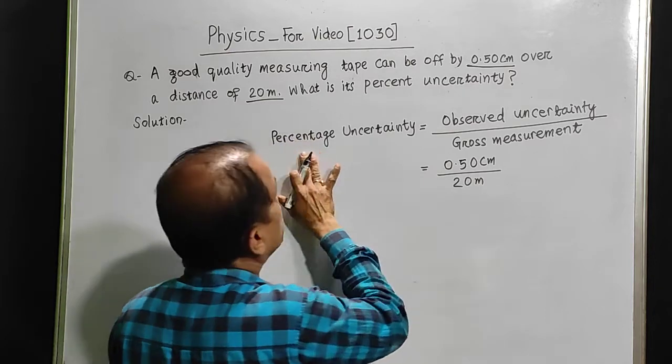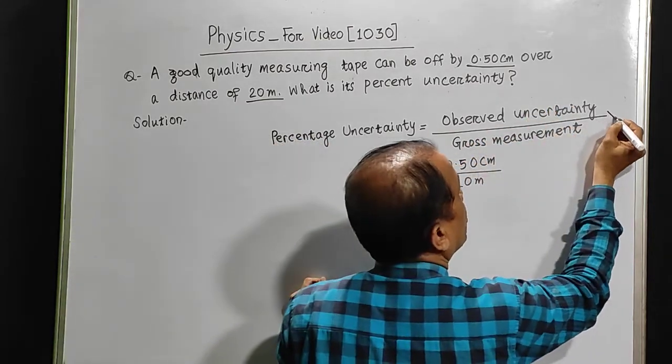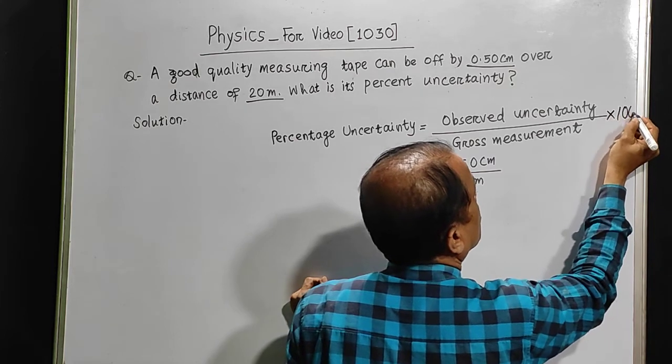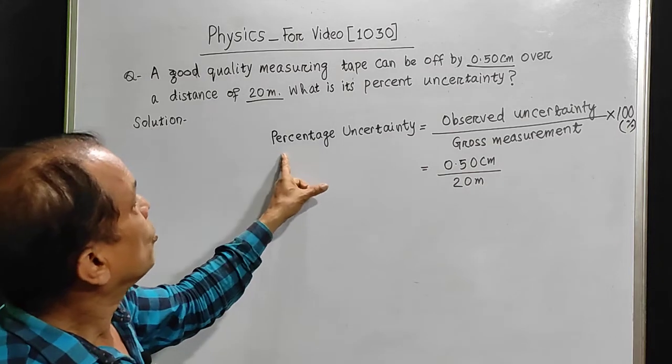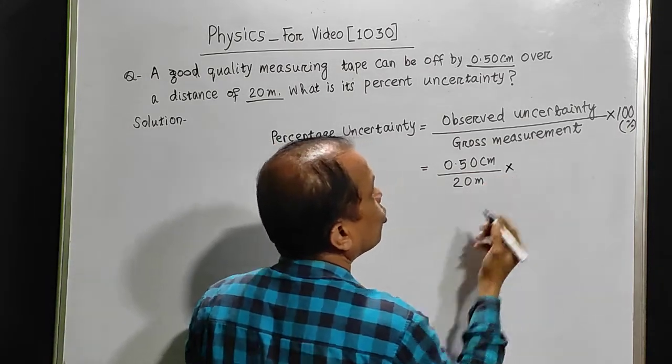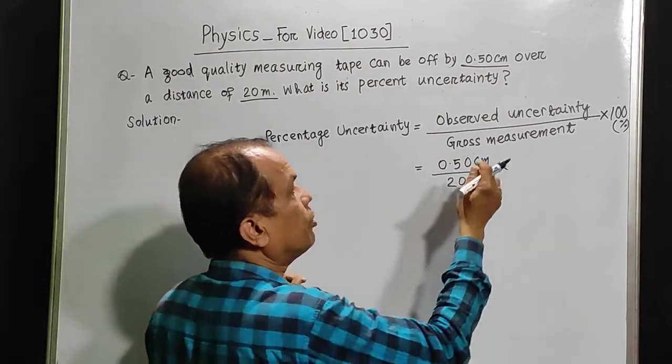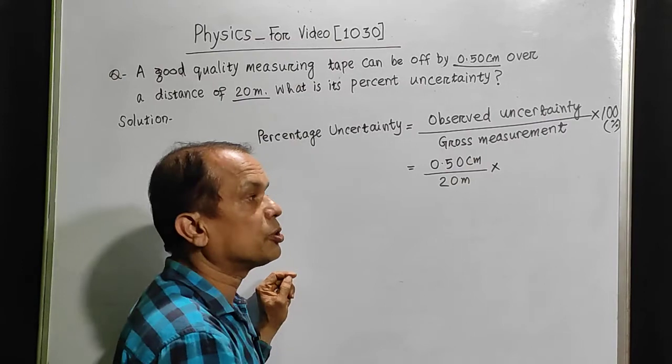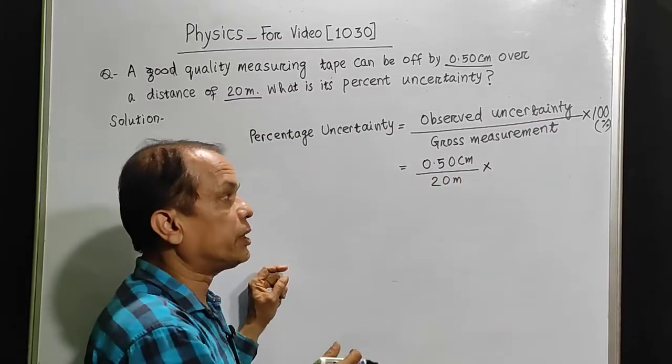Since this is the percentage uncertainty, we have to multiply by 100 percent. When we are calculating this, we have to note that the two entities should have the same units. Both should be centimeters or both should be in meters. They should not be in a hybrid state.